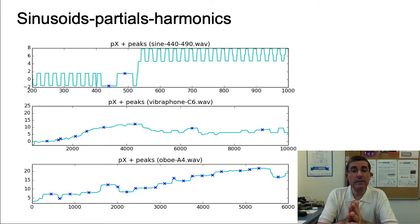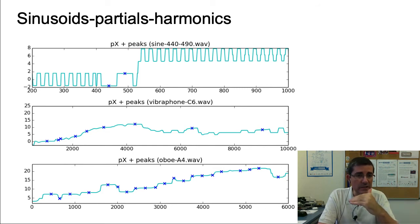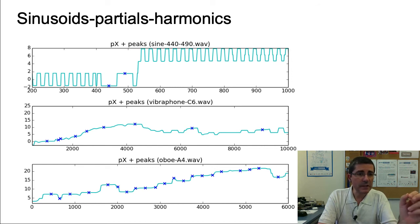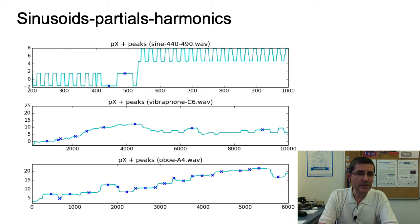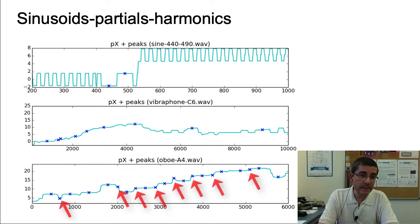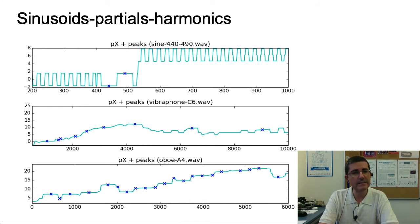Looking at the phase spectra of the same signals also helps understand these concepts. The top one shows the phase of the two sinusoids — a very flat area in the main lobes of the two sine waves. In the second plot with the vibraphone sound, some areas are quite flat where the crosses are, suggesting they are sinusoidal, while other crosses are not in a stable phase region, suggesting they may not be sinusoidal. On the oboe sound, similarly, some crosses are clearly in a flat stable region, while others are not — indicating they cannot be easily modeled as sinusoidal components.